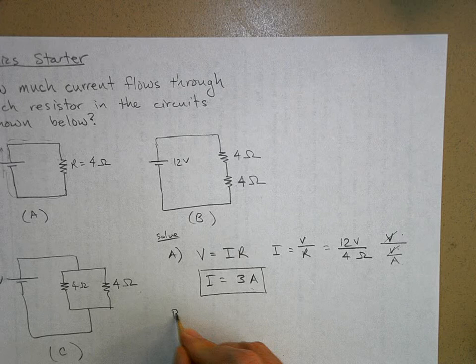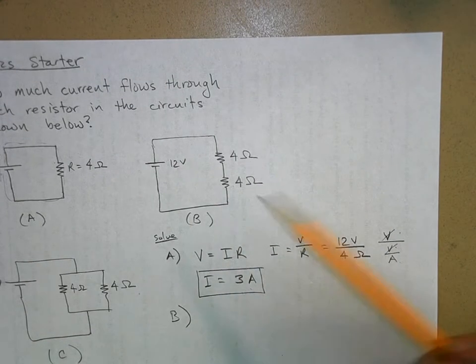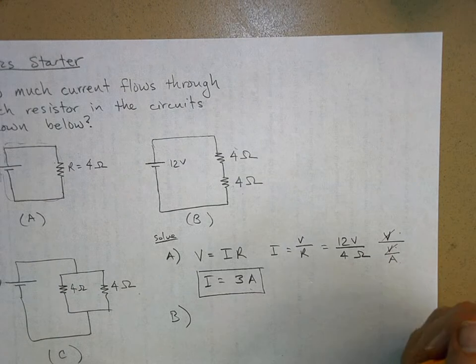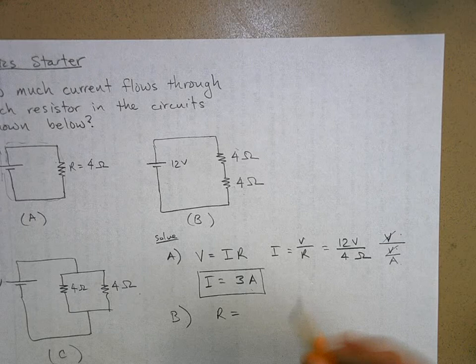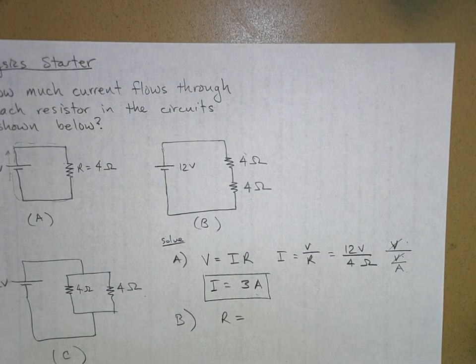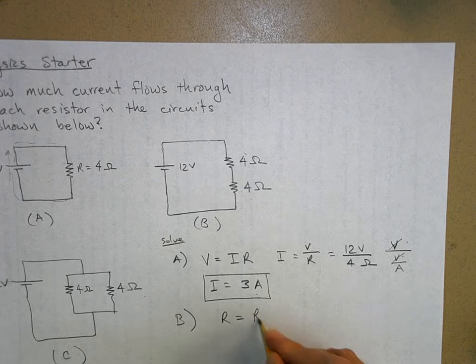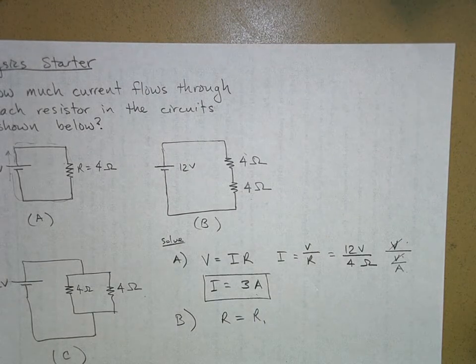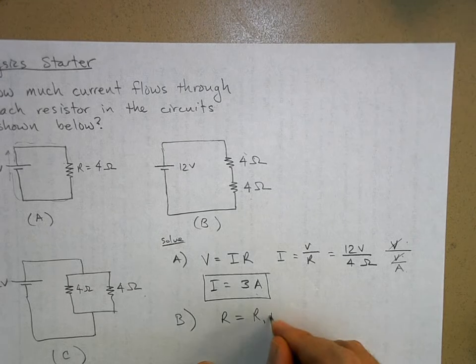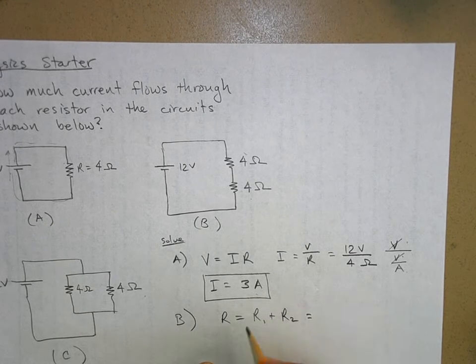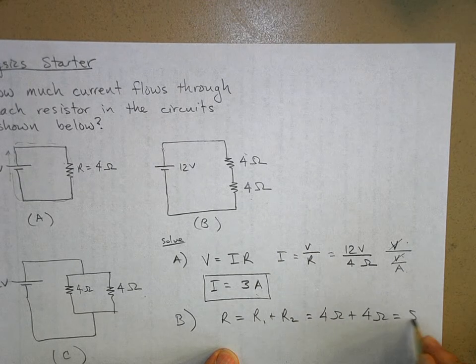Now for part B, we've got two resistors, but they're in series. So what is the resistance of this circuit? Well, resistors in series, you just add them up, right? That was the video you watched on Thursday when I was gone. And if you were gone, you need to go back and watch that. R1 plus R2, so that's 4 ohms plus 4 ohms equals 8 ohms.